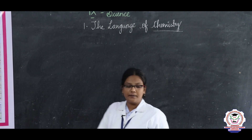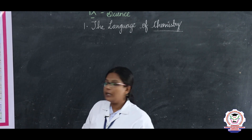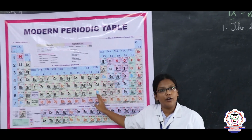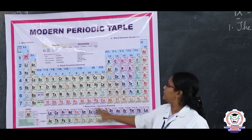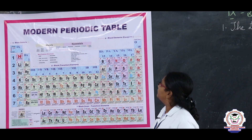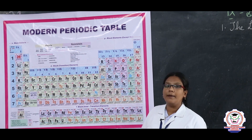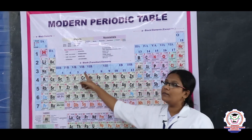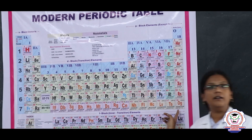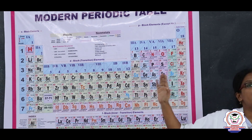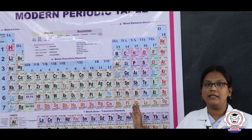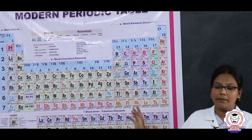Before we get into the subject, we need to know something about this table. This is called the modern periodic table and it was proposed by Mendeleev. So far, 118 elements have been discovered and they are arranged in order according to their periodic properties and atomic numbers.